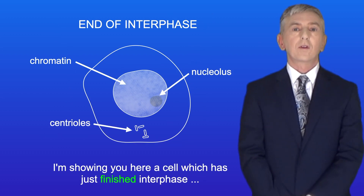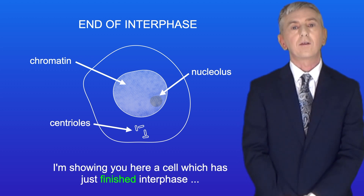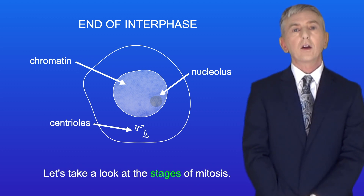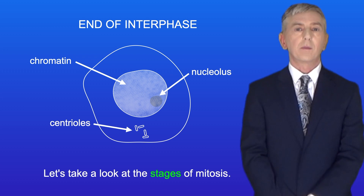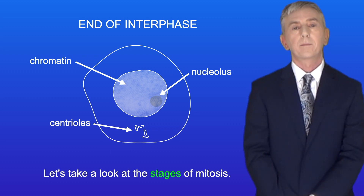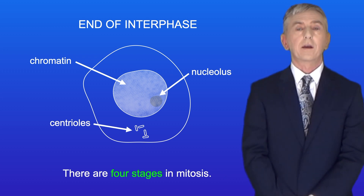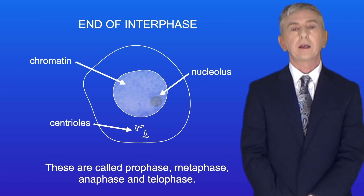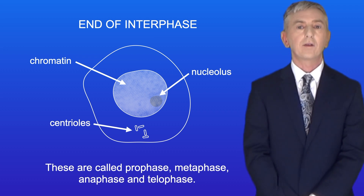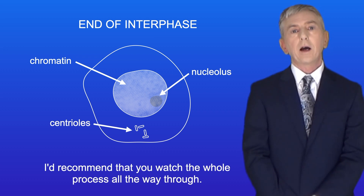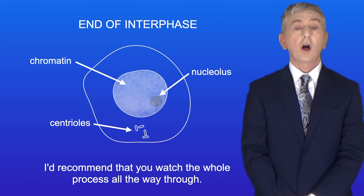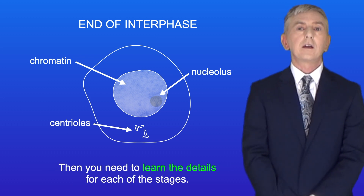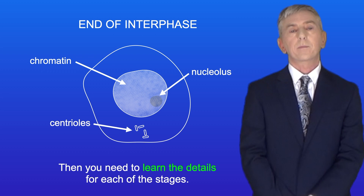I'm showing you here a cell which has just finished interphase and is about to enter mitosis. So let's take a look at the stages of mitosis. There are four stages in mitosis. These are called prophase, metaphase, anaphase, and telophase. I'd recommend that you watch the whole process all the way through, then you need to learn the details for each of the stages.